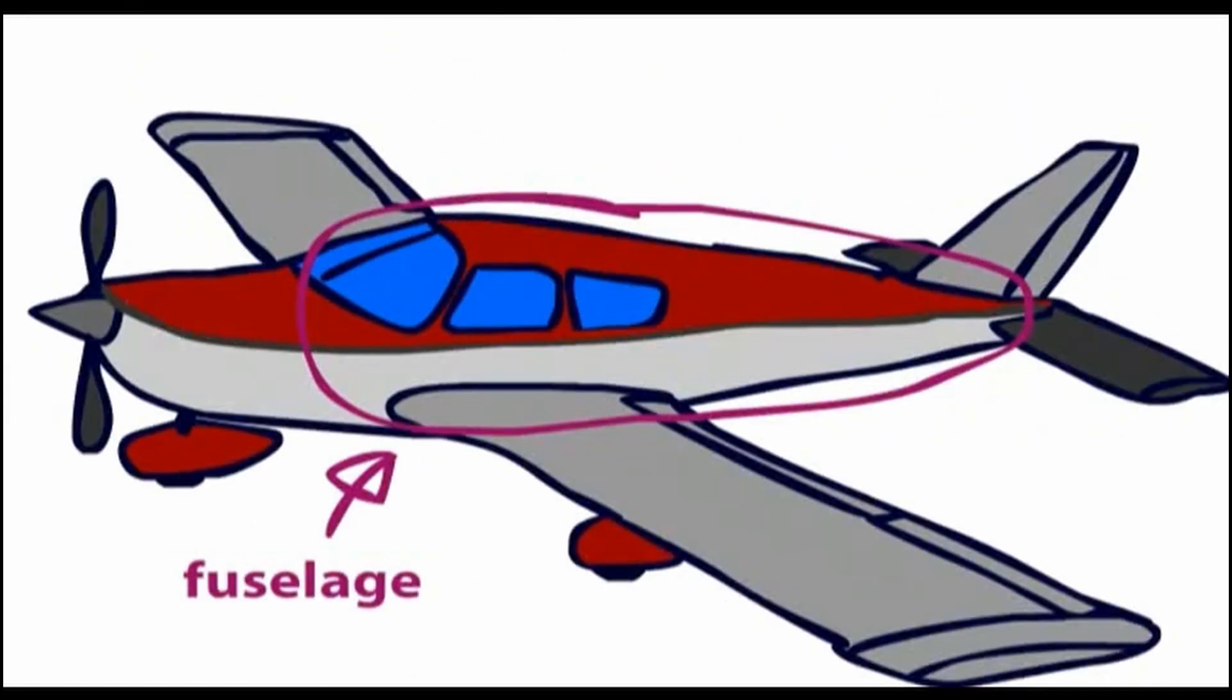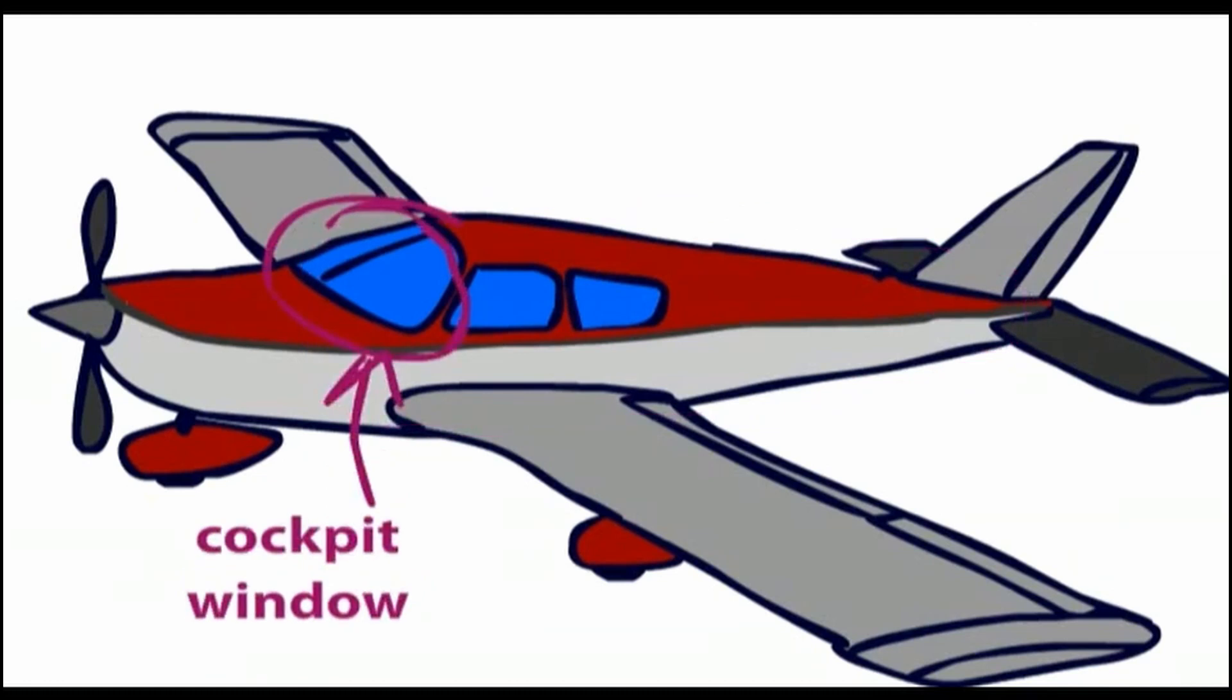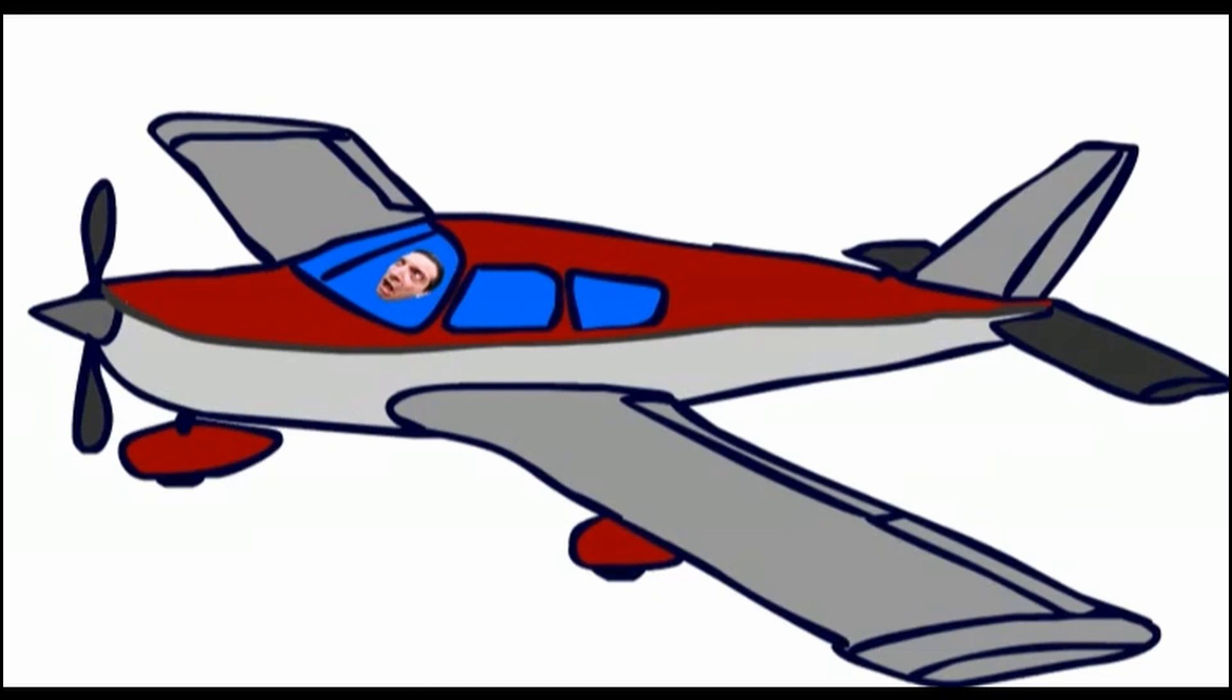The fuselage contains the cockpit, the seats and the baggage compartment. This front window is what you look out of to see where you are going. Here is you on your first lesson. Don't be nervous.